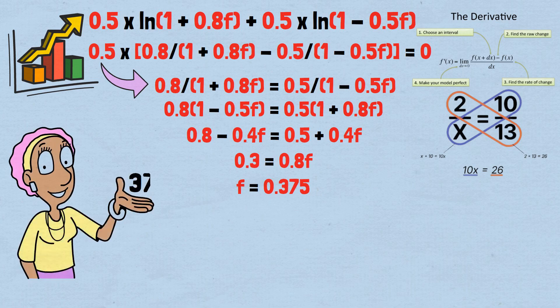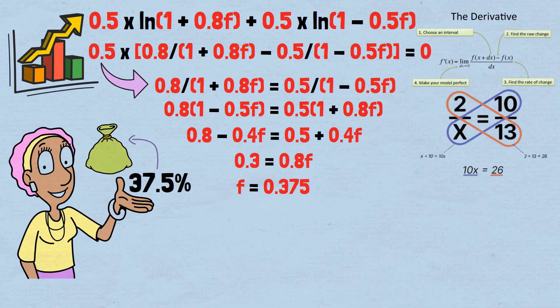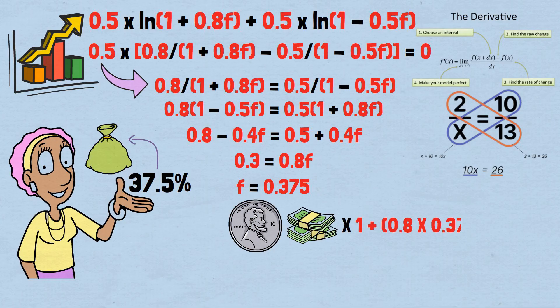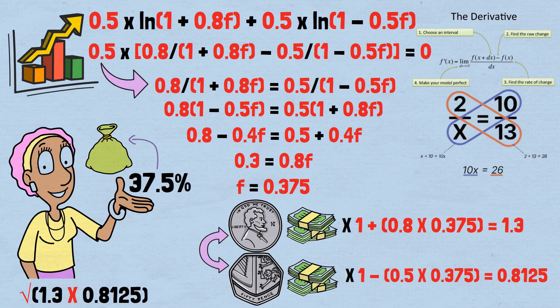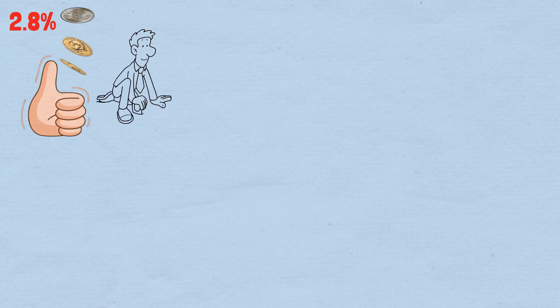When we bet 37.5% of our wealth, heads, our wealth multiplies by 1 plus 0.8 times 0.375 equals 1.3. Tails, our wealth multiplies by 1 minus 0.5 times 0.375 equals 0.8125. For equal heads and tails, square root of 1.3 times 0.8125 equals 1.028. That's a 2.8% gain per flip on average, turning our losing game into a consistent winner.